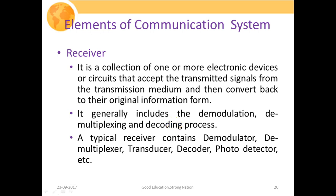A typical receiver contains a demodulator, demultiplexer, and transducer — an inverse transducer. For example, in a voice communication system, a microphone at the transmitter side converts the voice signal to electrical form. At the receiver side, a device is needed to convert the electronic signal back into analog mechanical vibrational waves so that we can understand it. So if the transmitter has a microphone, the receiver will have a speaker as the transducer.